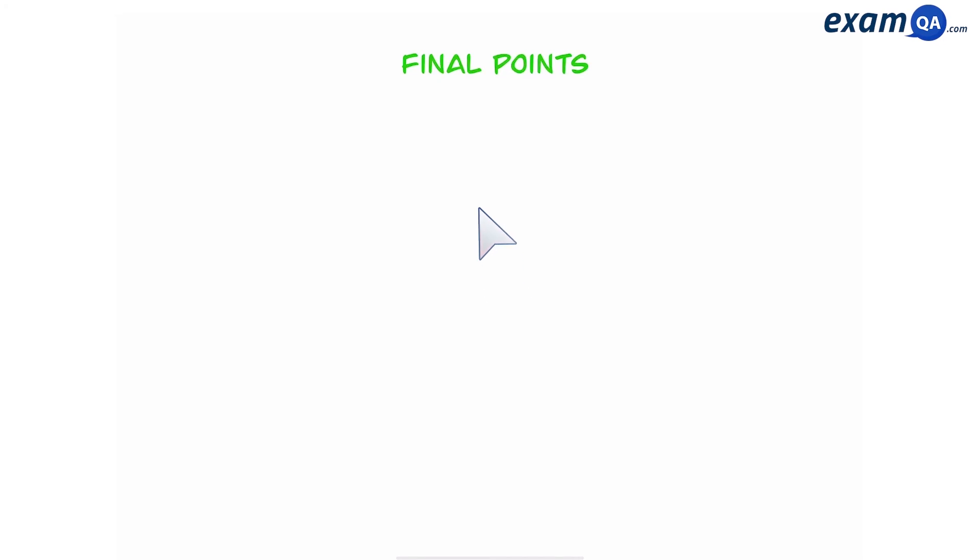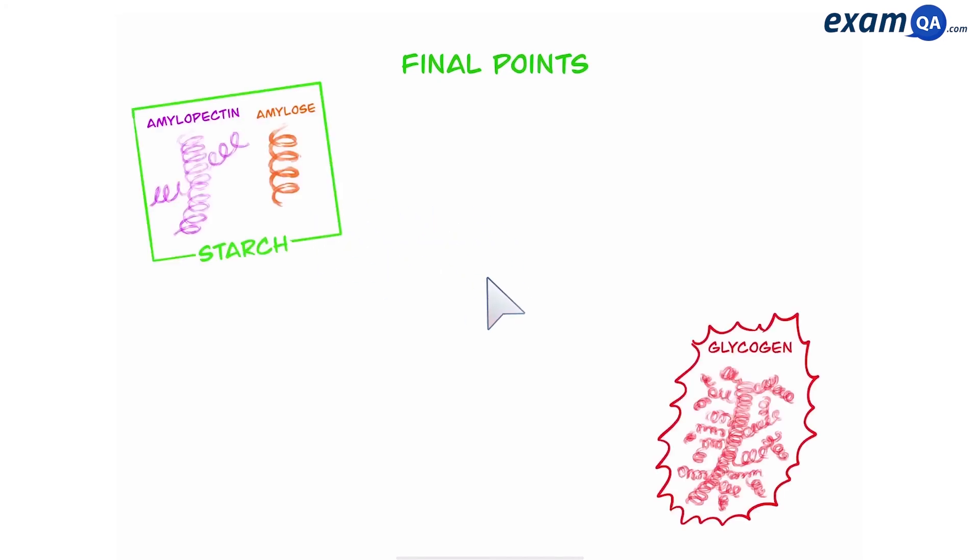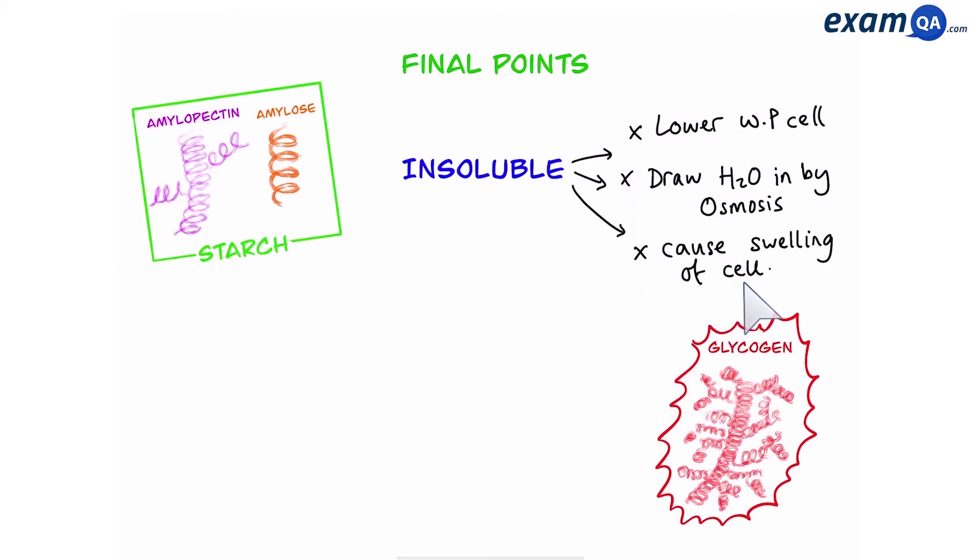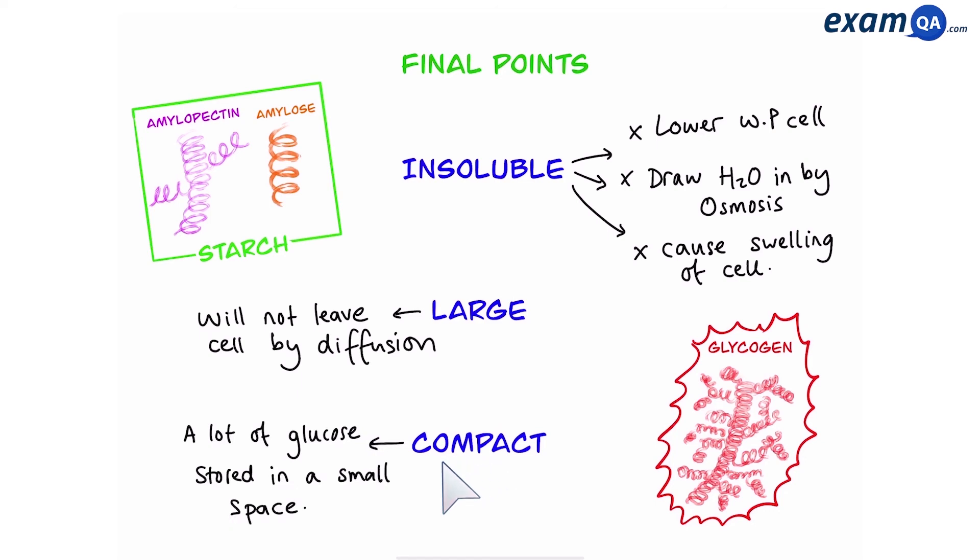Some final points between starch and glycogen. Both polysaccharides are insoluble. This means that it does not lower the water potential of the cell so this does not draw water in by osmosis and as a result it does not cause the swelling up of a cell. Also they are both large so they will not leave the cell by diffusion, and finally they are also compact, that means a lot of alpha glucose is stored in a small space.